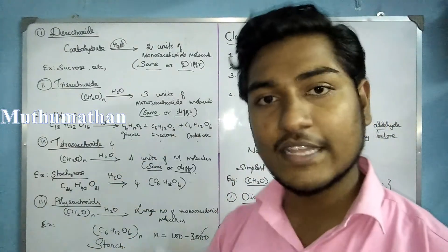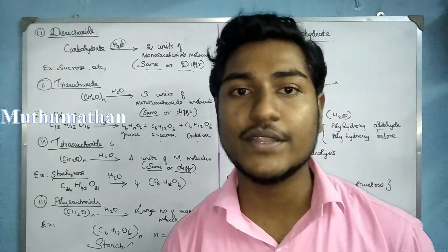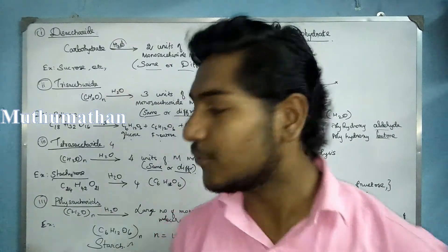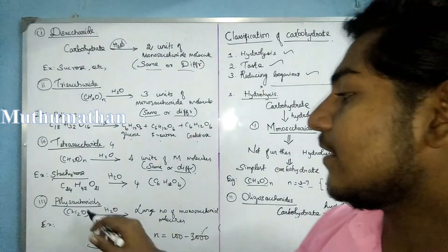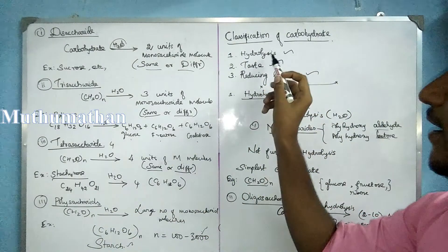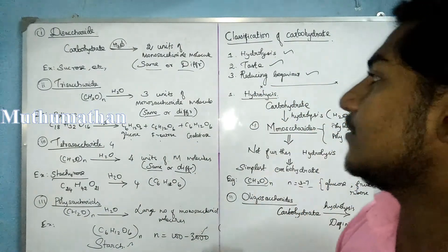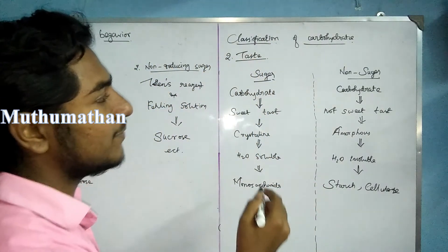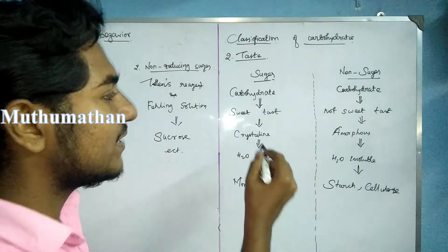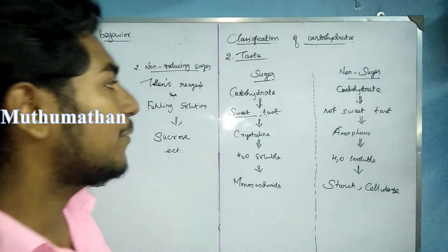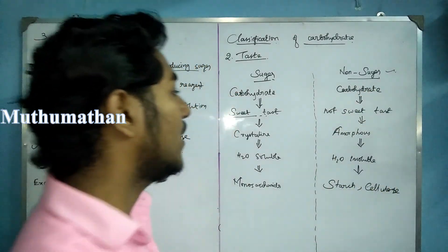Polysaccharides have a large molecular weight, ranging from 100 to 3,000 units, and include starch and cellulose. We can also classify carbohydrates based on taste into sugars and non-sugars. If a carbohydrate has a sweet taste, it is classified as a sugar.